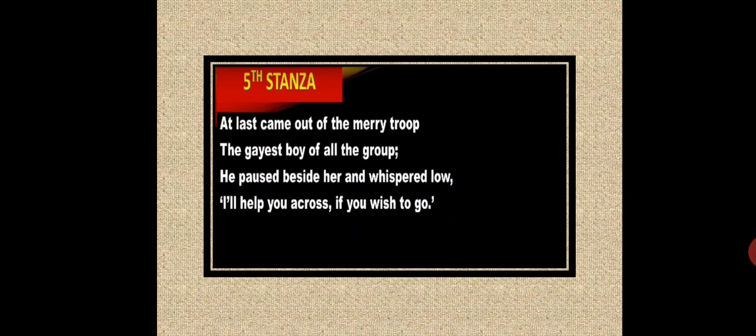At last came out the merriest boy of all the group. He paused beside her and whispered low, 'I'll help you across if you wish to go.' Then suddenly from that particular group of boys, one — the happiest, merriest boy — came out of that group. He paused next to her and softly whispered in her ear: 'I'll help you cross the road, if you wish to go.' From among so many people, that small young boy came out to help that lady and offered a helping hand. The rhyming words are: troop/group and low/go.